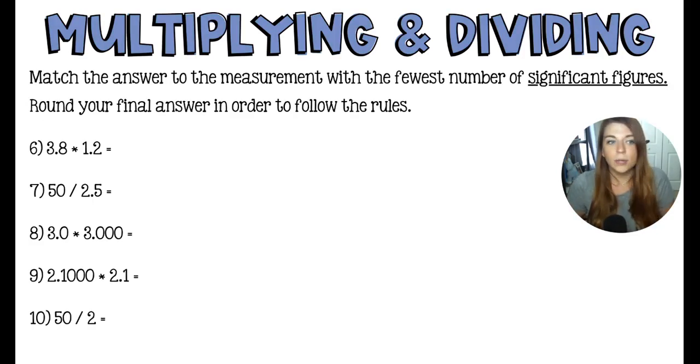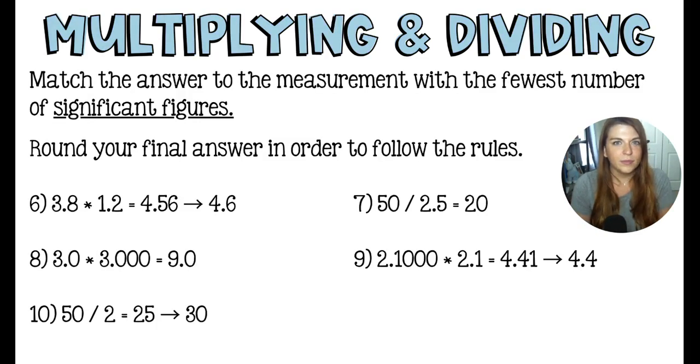All right, here are four more for you to practice. Again, be mindful of significant figures when you're doing this. Do the math first and then round the final answer. All right, these are going across. So number seven is over here. 50 divided by 2.5 comes out to 20. 20 on the nose, but it is important that we do not put a decimal behind the 20 because this 50, lacking a decimal, only has one significant figure. So your 20 should also have one significant figure.